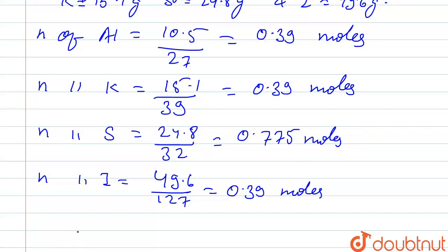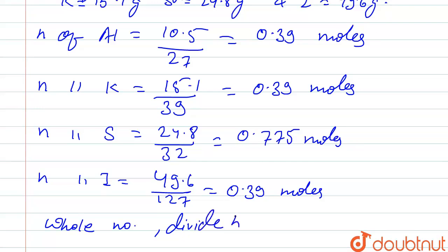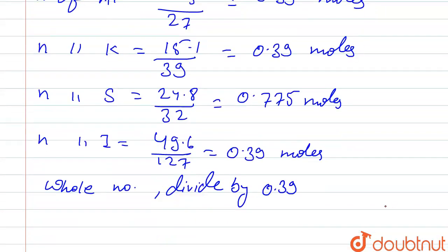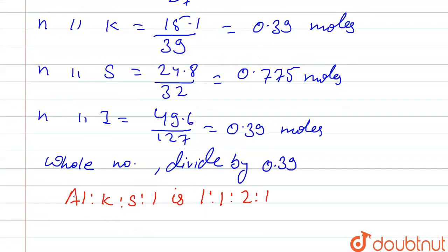So the ratio of number of moles is 0.39 : 0.39 : 0.775 : 0.39. To get whole numbers, we divide each by the smallest value, 0.39. The ratio of Al : K : S : I becomes 1 : 1 : 2 : 1 after dividing.